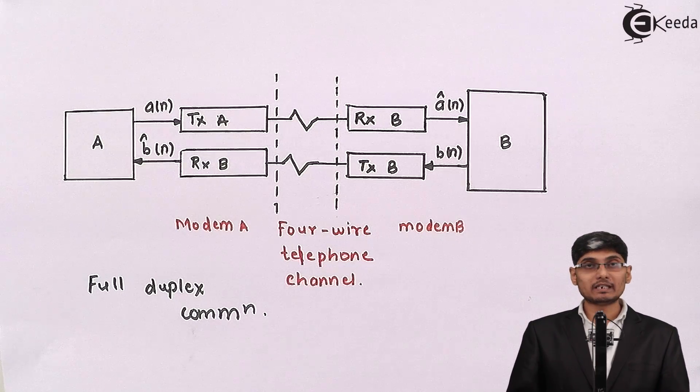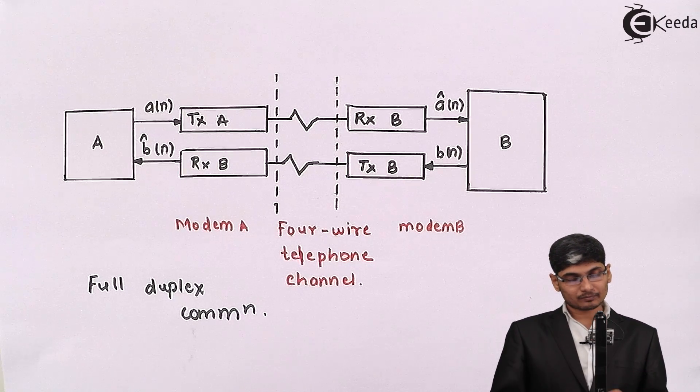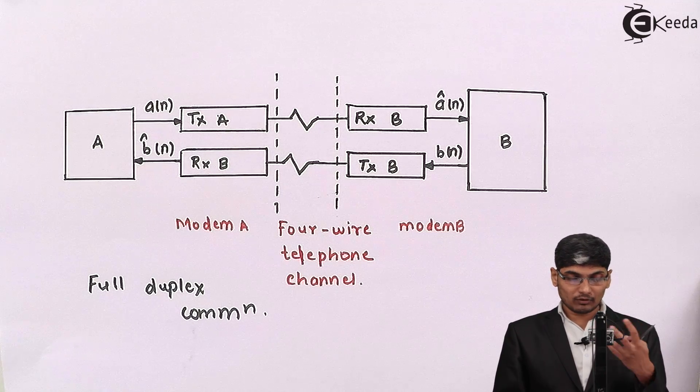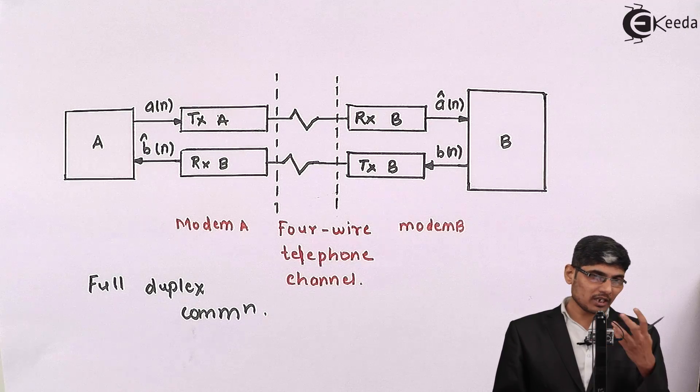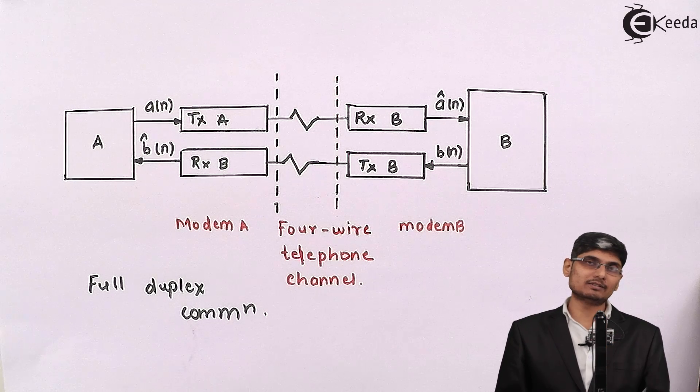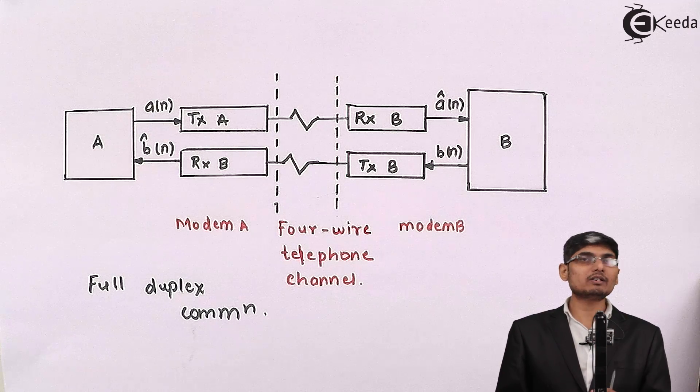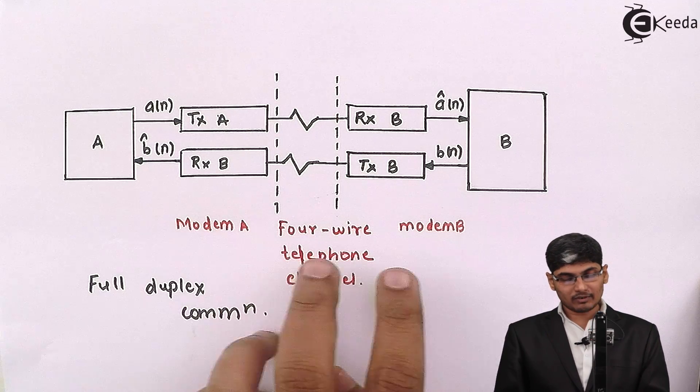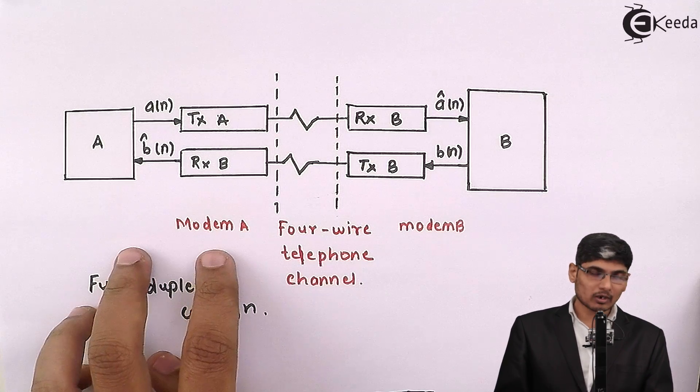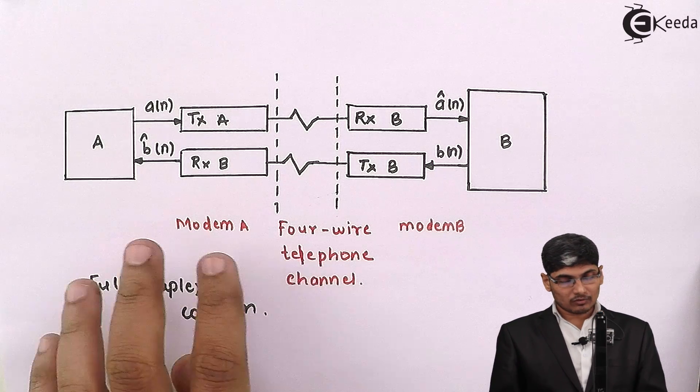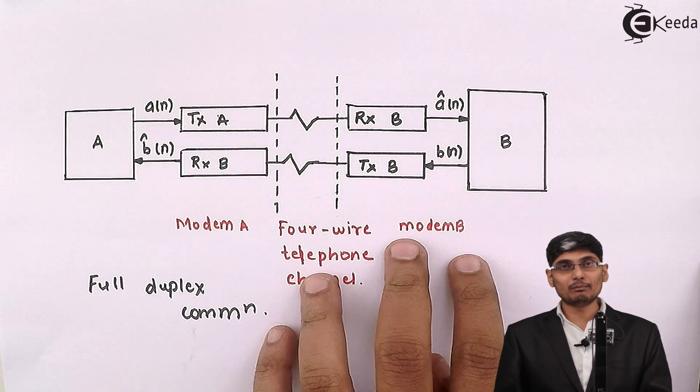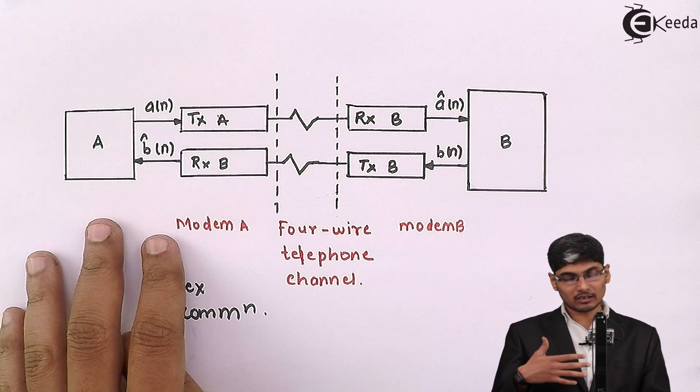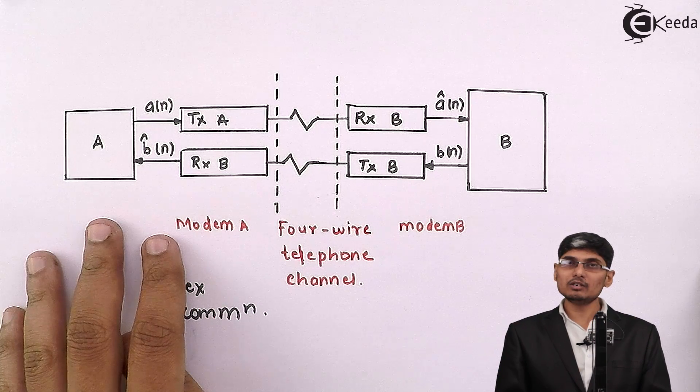In telephony, when we speak into the microphone we get analog signals. The analog signals need to be translated to digital signals. For that reason we use modems. We have modem A and modem B. The full form for modem is modulator-demodulator, which converts the analog data into digital data to transmit over the telephone channel.